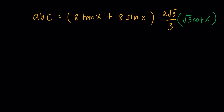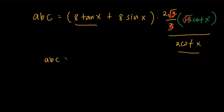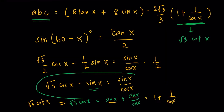Substituting back, root 3 times root 3 is 3, so the root 3 cotangent X term simplifies this part to 2 cotangent X. Multiplying everything out: ABC equals 8 tangent X times 2 cotangent X plus 8 sine X times 2 cotangent X. Tangent times cotangent is 1, giving 16. And sine X times cotangent X equals cosine X, giving 16 cosine X. So ABC equals 16 plus 16 cosine X, and I just need to find cosine X.